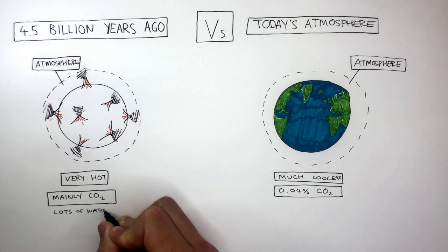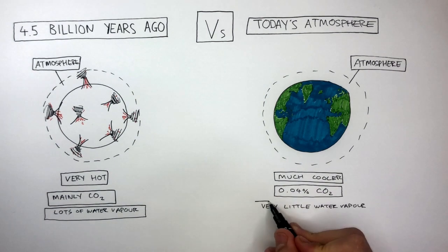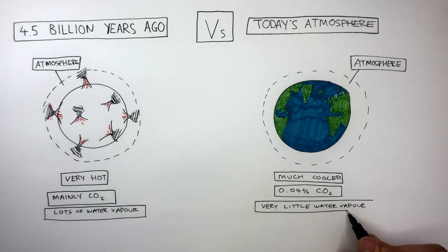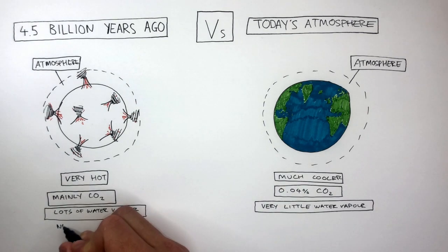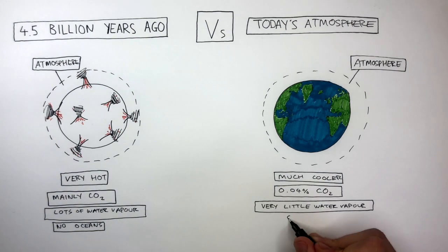There was lots of water vapour in Earth's early atmosphere, and there's very little water vapour in today's atmosphere compared to what it was like 4.5 billion years ago. There were no oceans 4.5 billion years ago, whereas in today's Earth we know there are a lot of oceans.